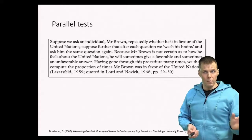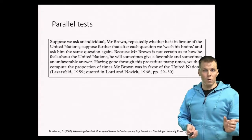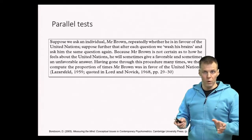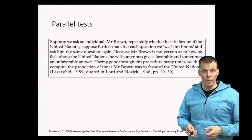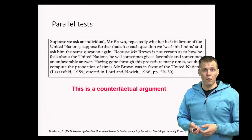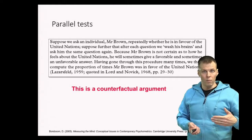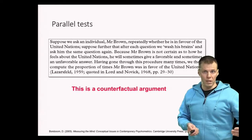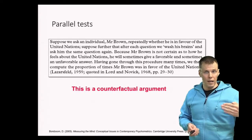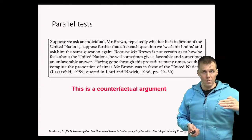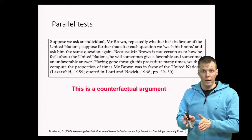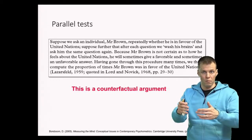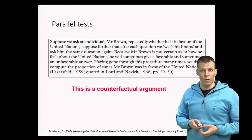then if we ask him the same question again, we would have to brainwash Mr. Brown in between those two questions, so they are really independent tests of the same attribute. This is of course a counterfactual argument, because we cannot brainwash our subjects. Subjects will know what they answered last time, so if we ask a survey question, how the person answers the next question will be influenced by how they answered the first. We simply cannot ask the same question over and over.